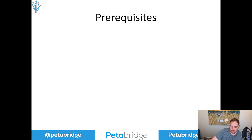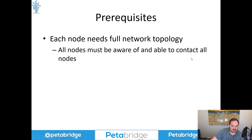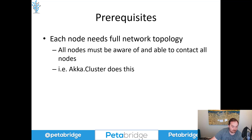Now the first couple of prerequisites we would need in order to actually use consistent hashes. The first is that every node on the network that's going to be responsible for either sending data to stateful entities or hosting them needs to have access to the full network topology — I basically need to know who are all the locations on the network that can store data and be able to contact them. If you're building something like a multiplayer video game, you likely already have the tools to do this. But if you're building something more enterprise-oriented, you might want to consider using a library like Akka.Cluster.